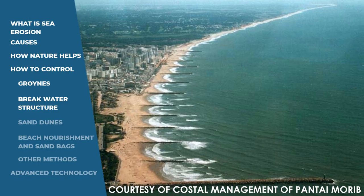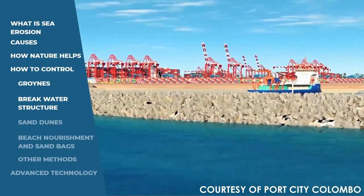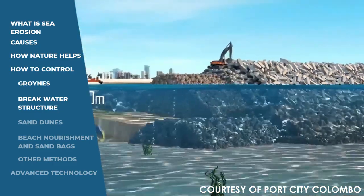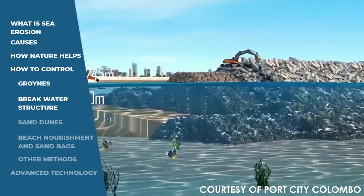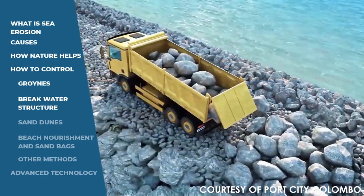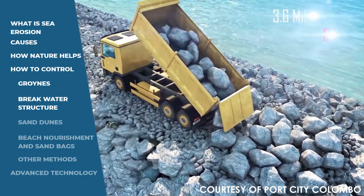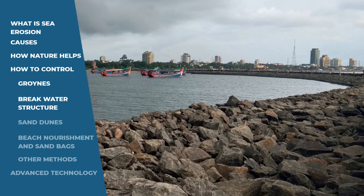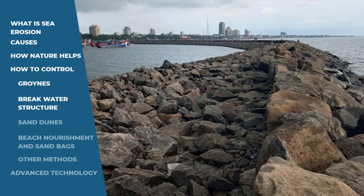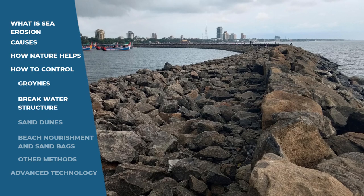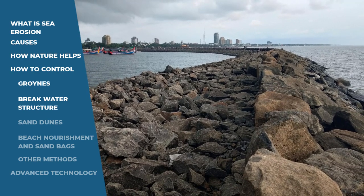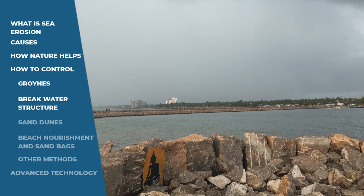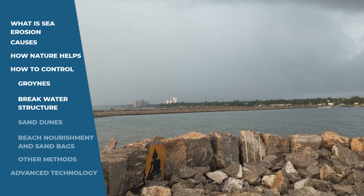Breakwater structure — it is a structure which extends from the beach into the sea to enclose a harbour and protect it from the effect of wind-generated waves by reflecting and dissipating their force. These are mainly constructed for the purpose of forming an artificial harbour with a basin, protected from the effect of waves to provide safe berthing for vessels. It can also prevent the direct attack of sea waves. Its cost of construction depends upon the material used.